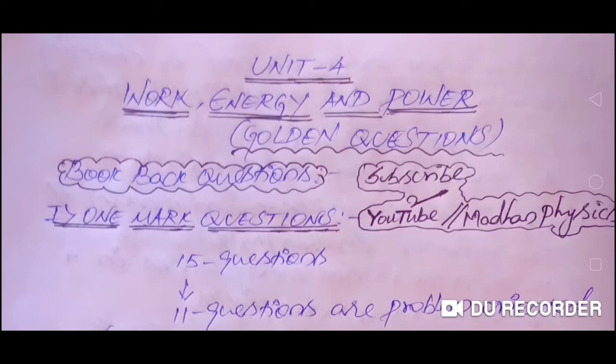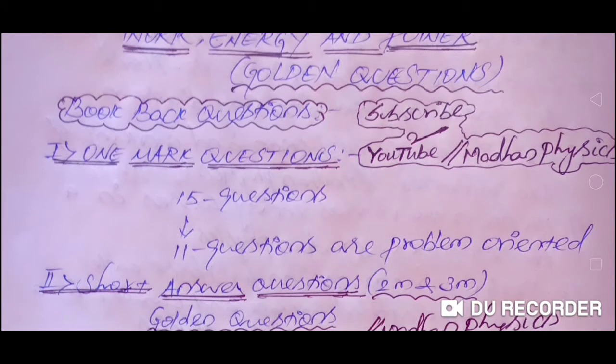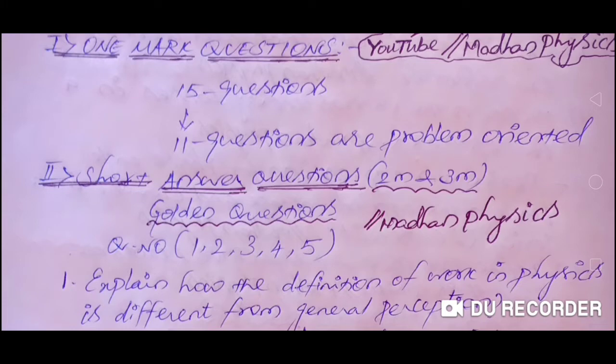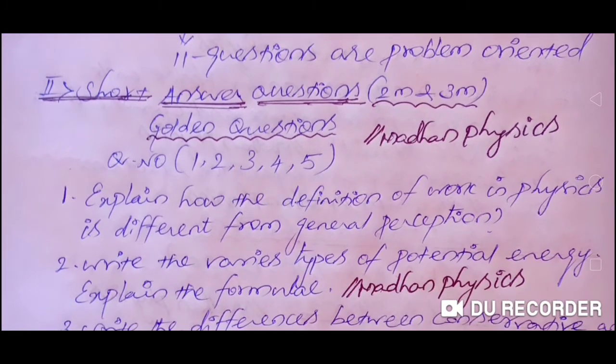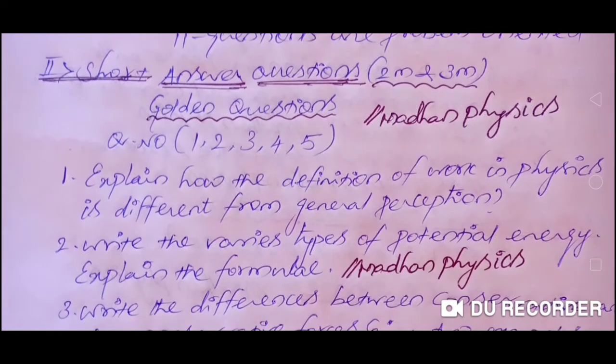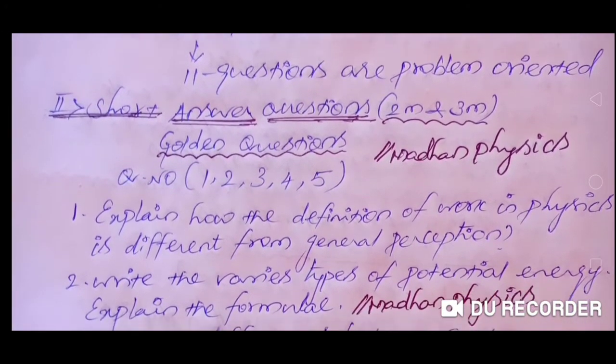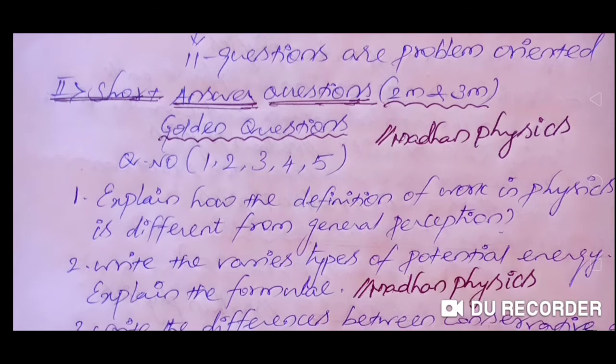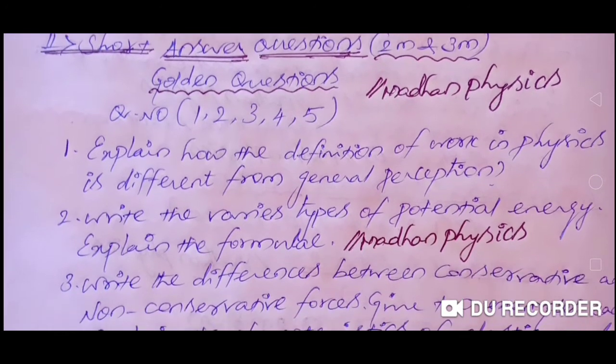In the one mark section, there will be 15 questions. Around 11 questions are problem oriented. If you solve, you can do well in physics. One marker is correct - solve and the answer is correct. Next, we have short answers. What are the golden questions? What are the important questions?